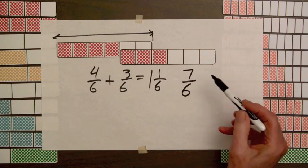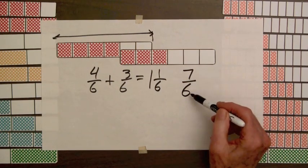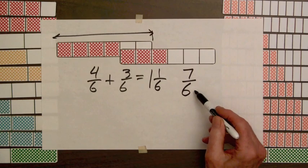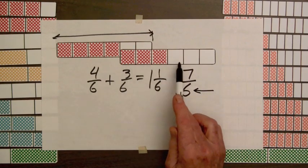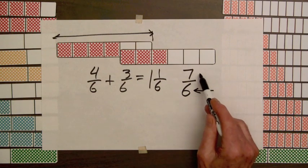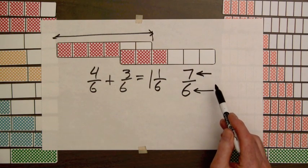Now this is the first time we've seen this fraction with the numerator larger than the denominator, but notice that the denominator still tells the number of parts in the whole bar, and the 7 indicates the number of these parts.